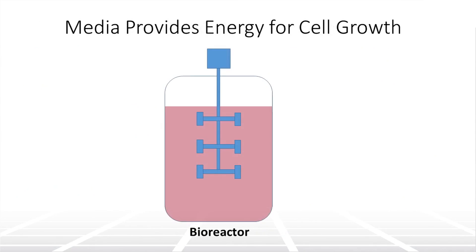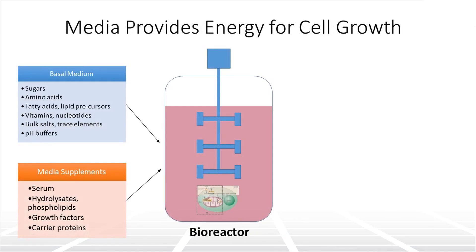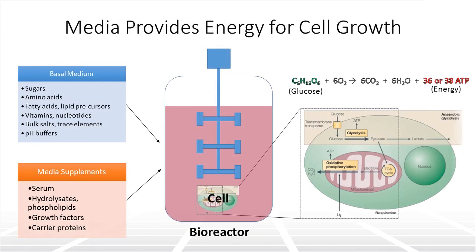Cell culture media provides basic nutrients for energy to make cell mass and must be balanced for proper salt concentration or osmolality. Often during process development, the basal medium is insufficient to obtain proper cell mass, so supplements are added. Supplements promote cell growth by providing key components for specific signaling pathways and special nutritional needs, such as the delivery of cholesterol.